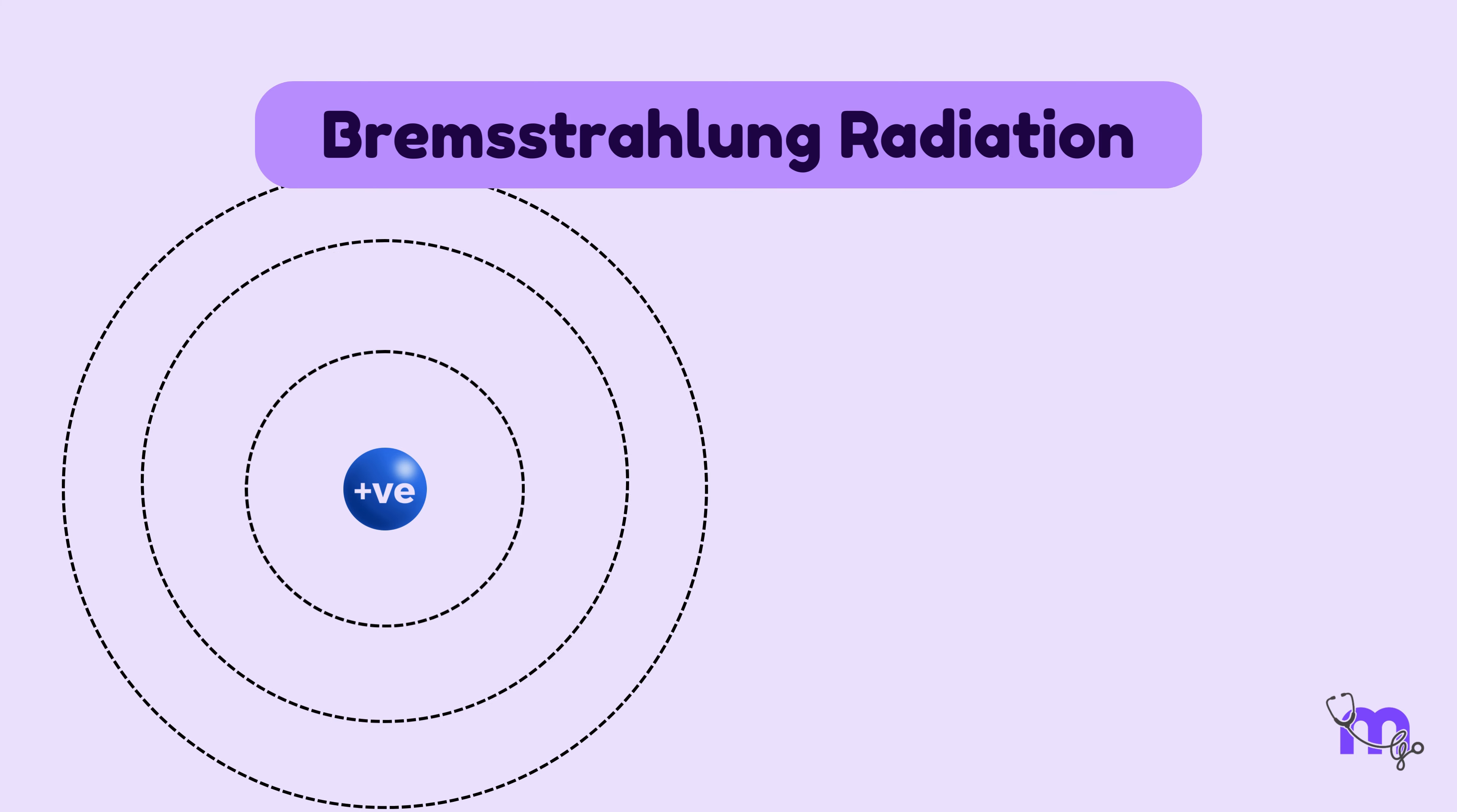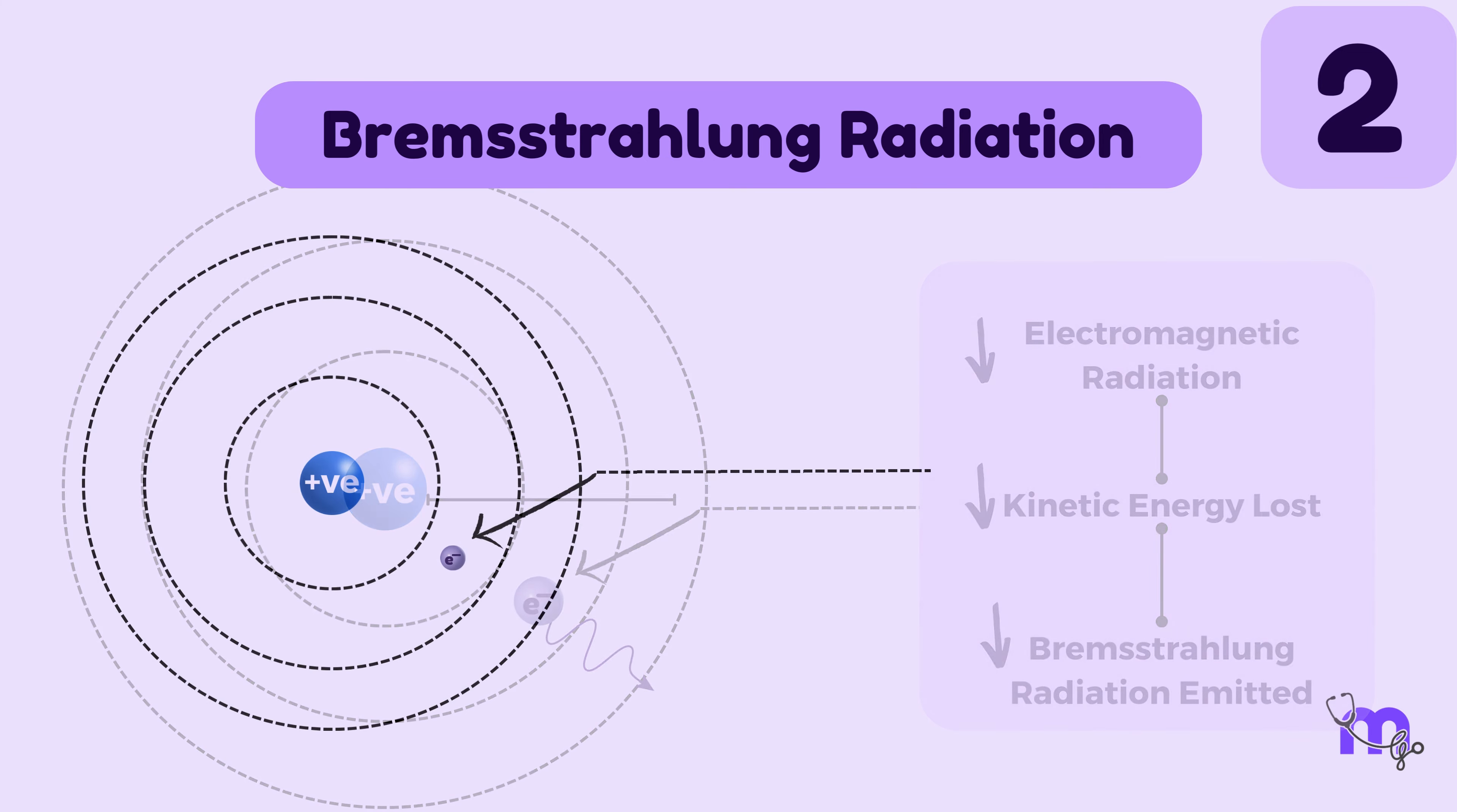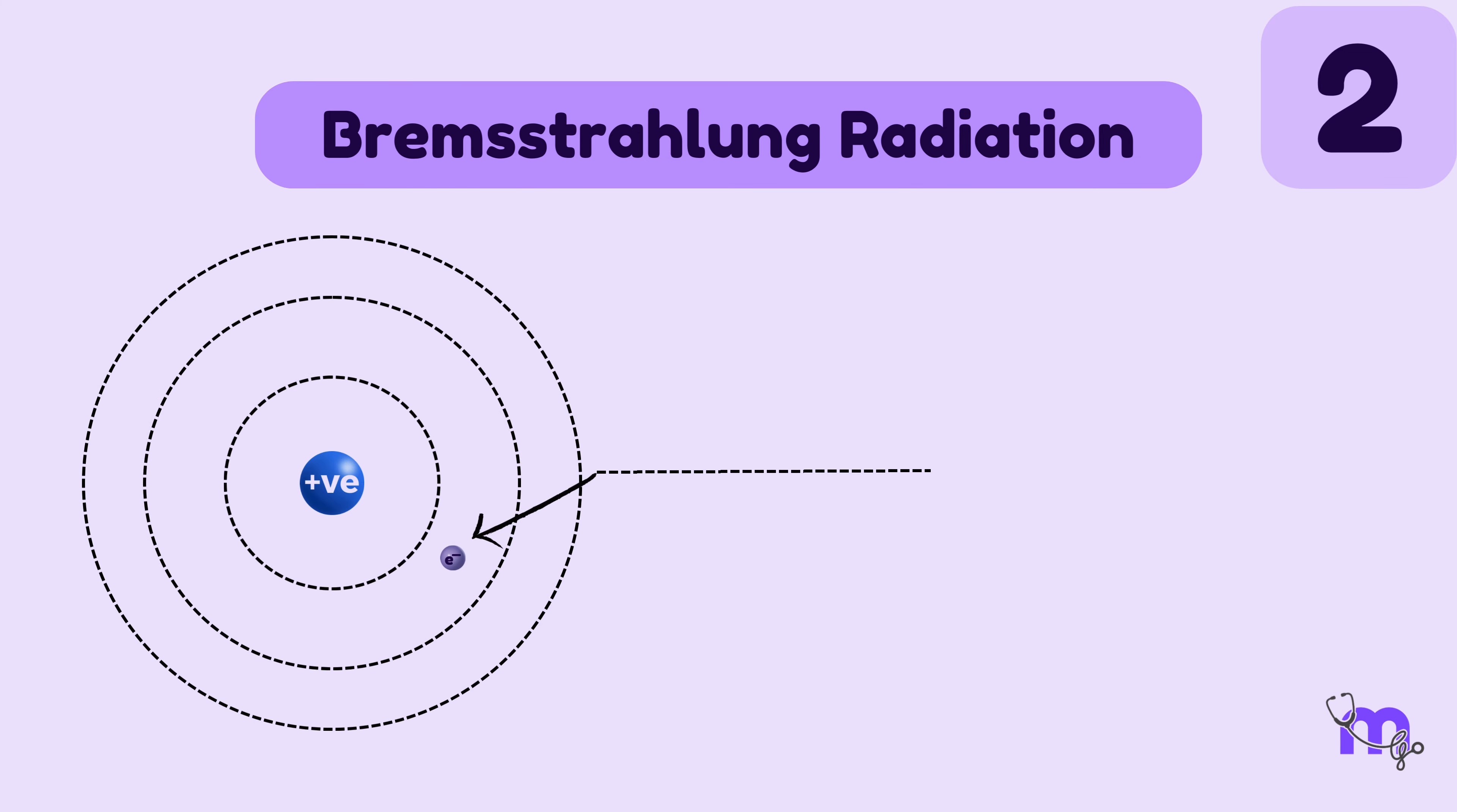Moving on, let us discuss the second example. If the electron was further away from the nucleus, the electromagnetic force would be lesser. This would lead to less loss of kinetic energy and bremsstrahlung radiation emitted. This type of small deflection is the most common, producing low-energy photons that do not contribute to useful X-ray beams.